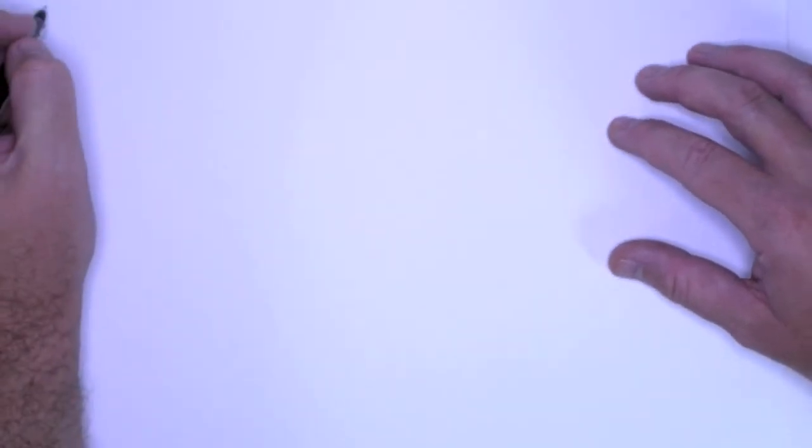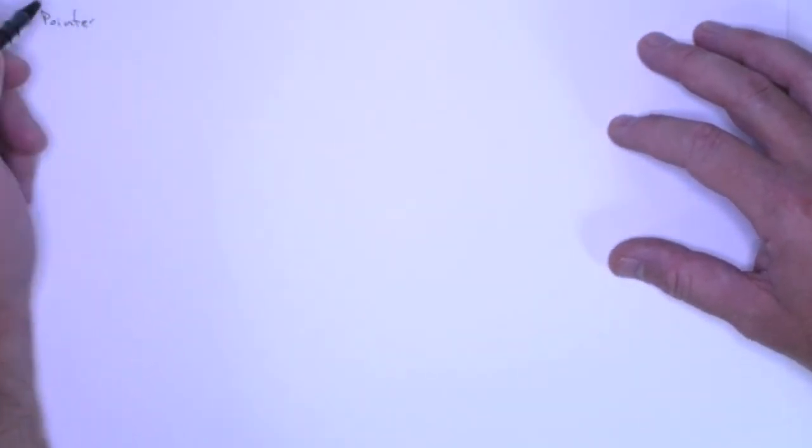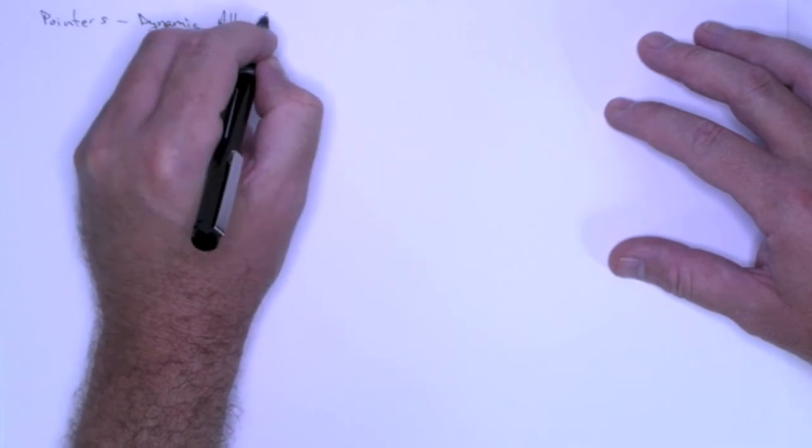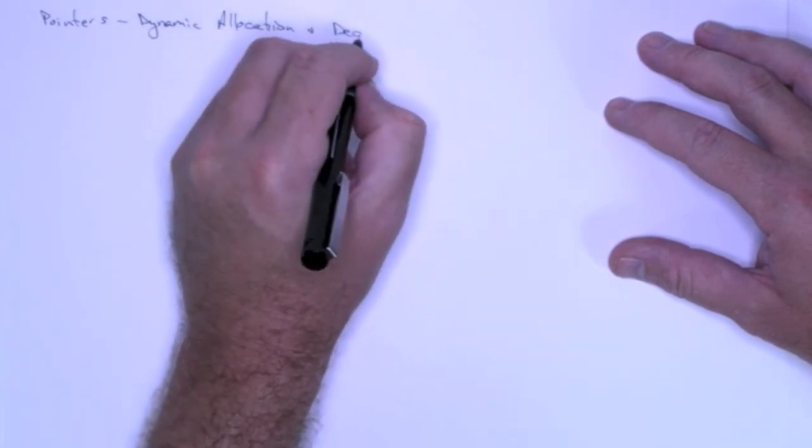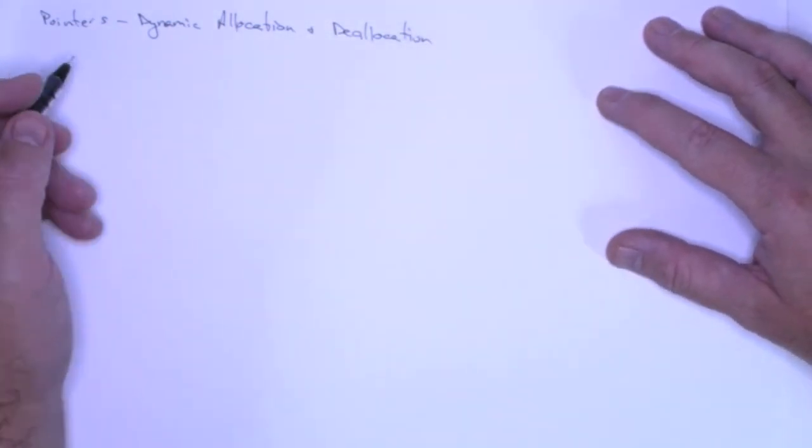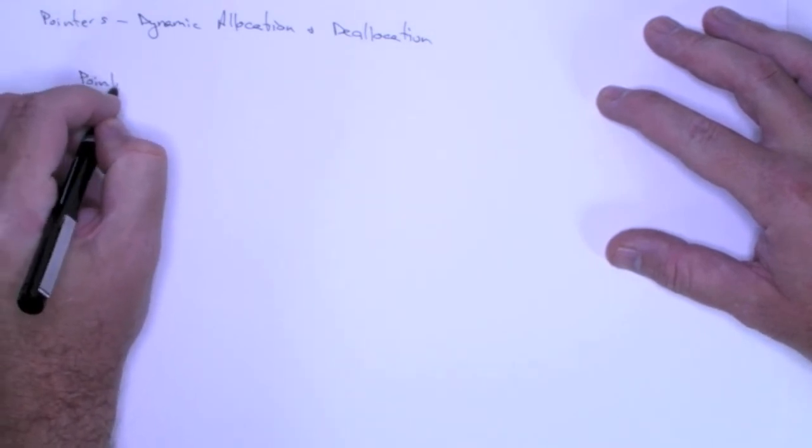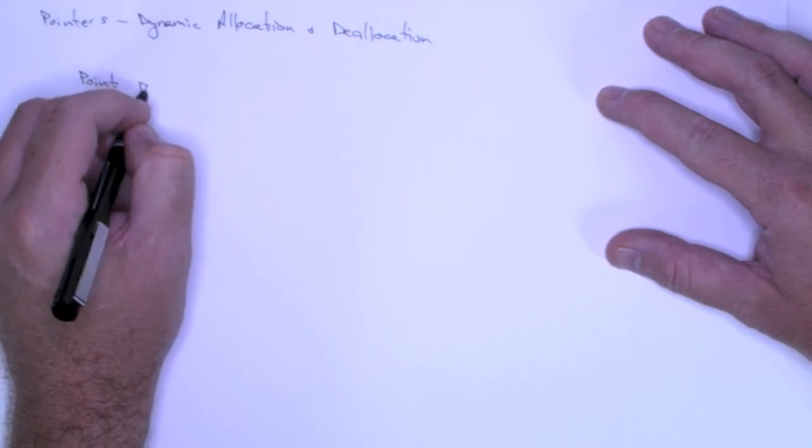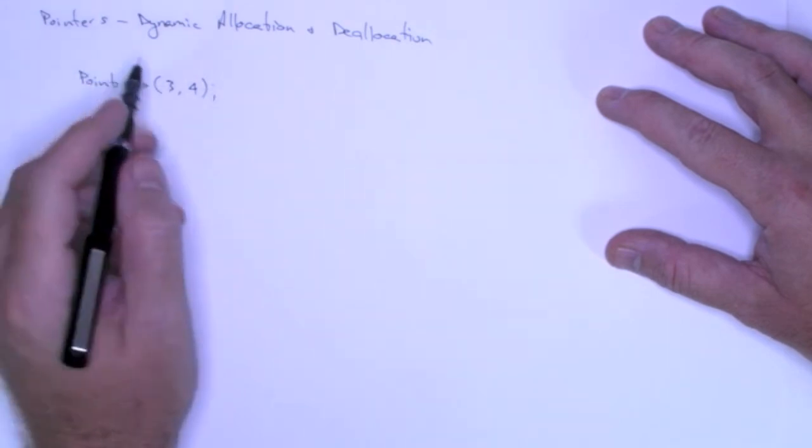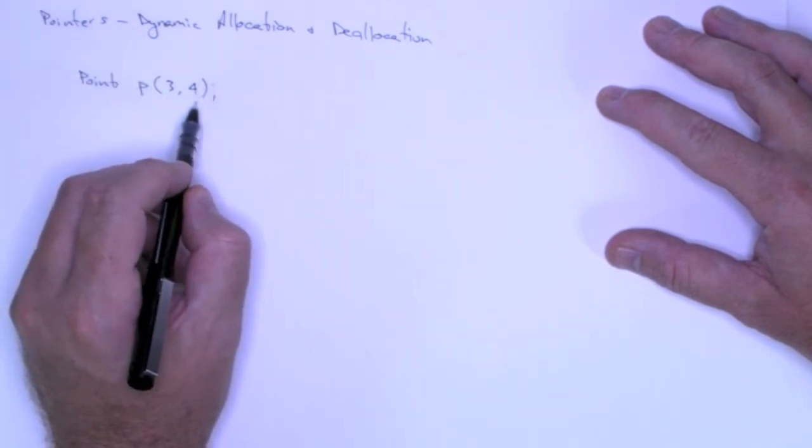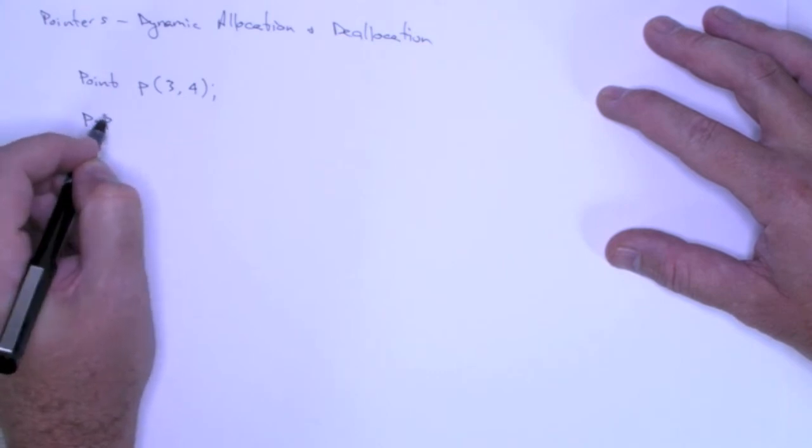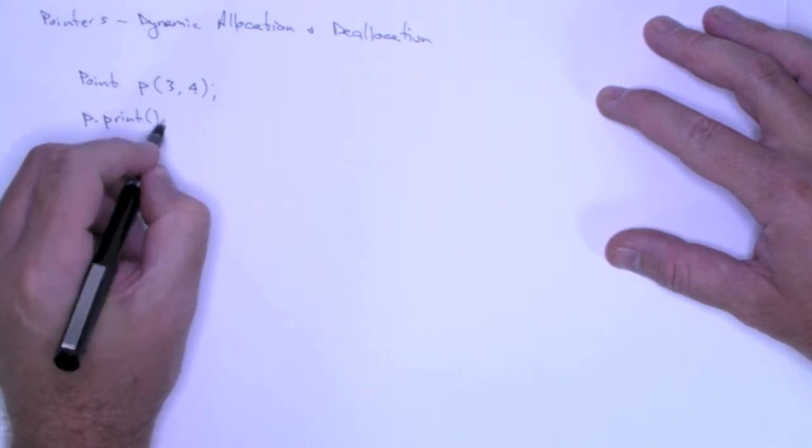This also works for class objects. So let's say, for example, I have a point class. So to statically allocate a point object, I can simply use p, and I will pass in 3 and 4 to the constructor, passing in 3 as x and 4 as y. Then if I want to print this object, or call the print method of the object, I simply do that.